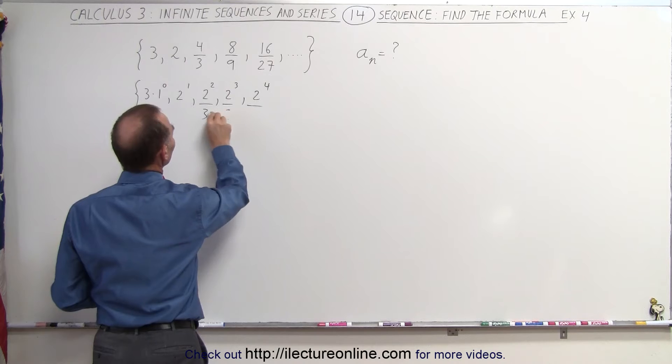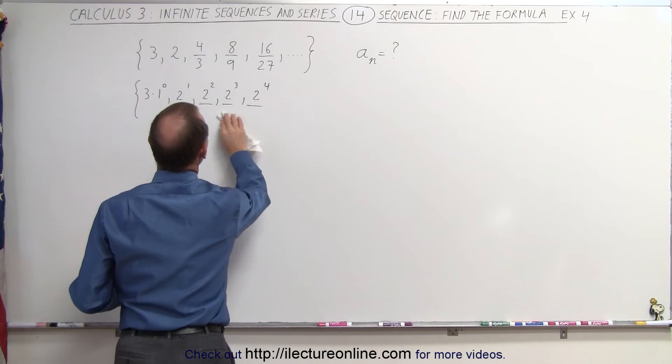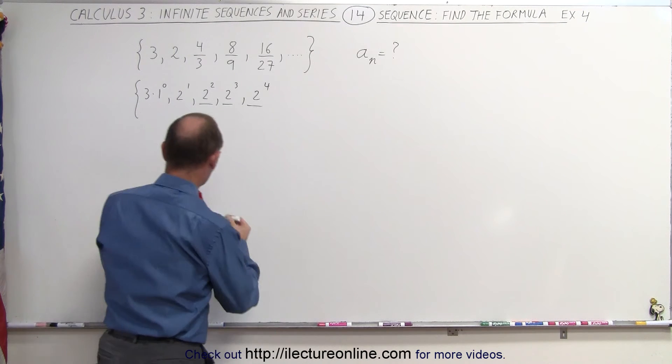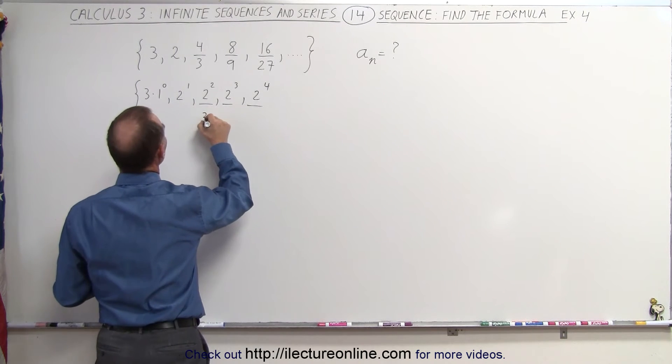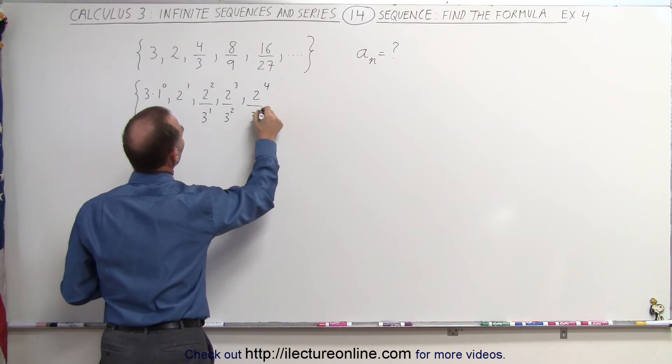So sometimes it's a little bit of a trial and error methodology, where you look at it and say, what if I write it differently? So let's do this. Let's write this as 3 to the first power, 3 to the second power, 3 to the third power.